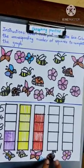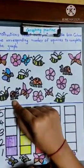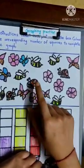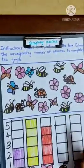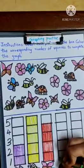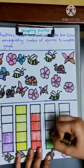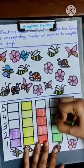Then, find how many lady birds are there. One, two, three. There are three of them. So, we are going to also color three boxes. One, two, three.